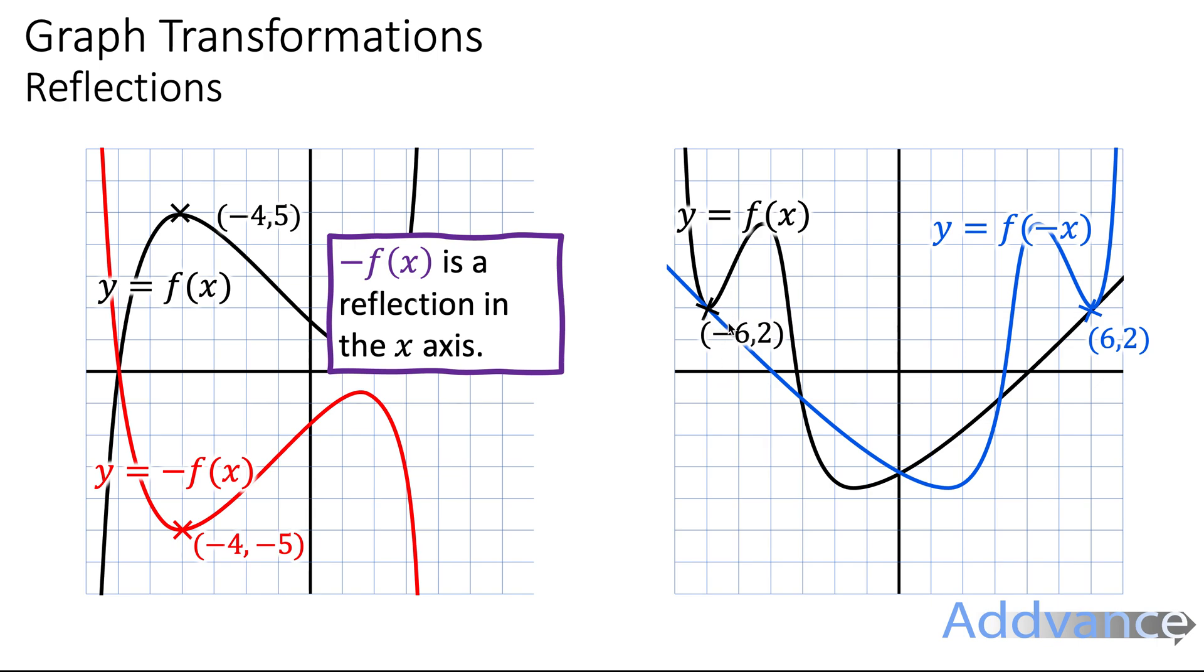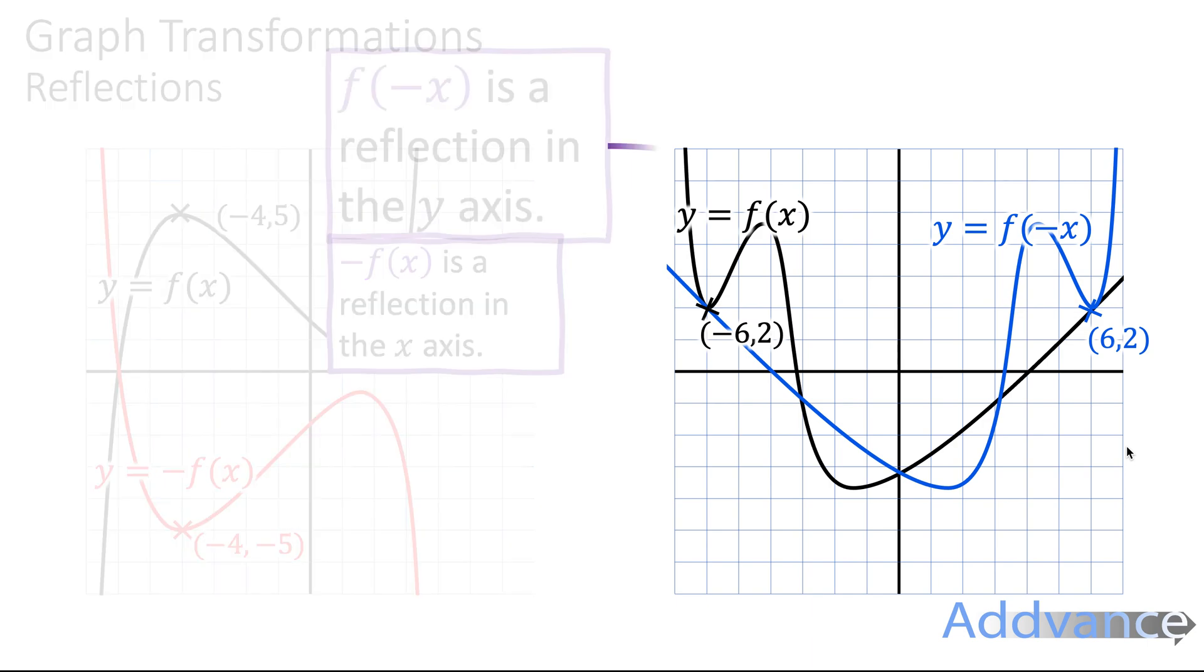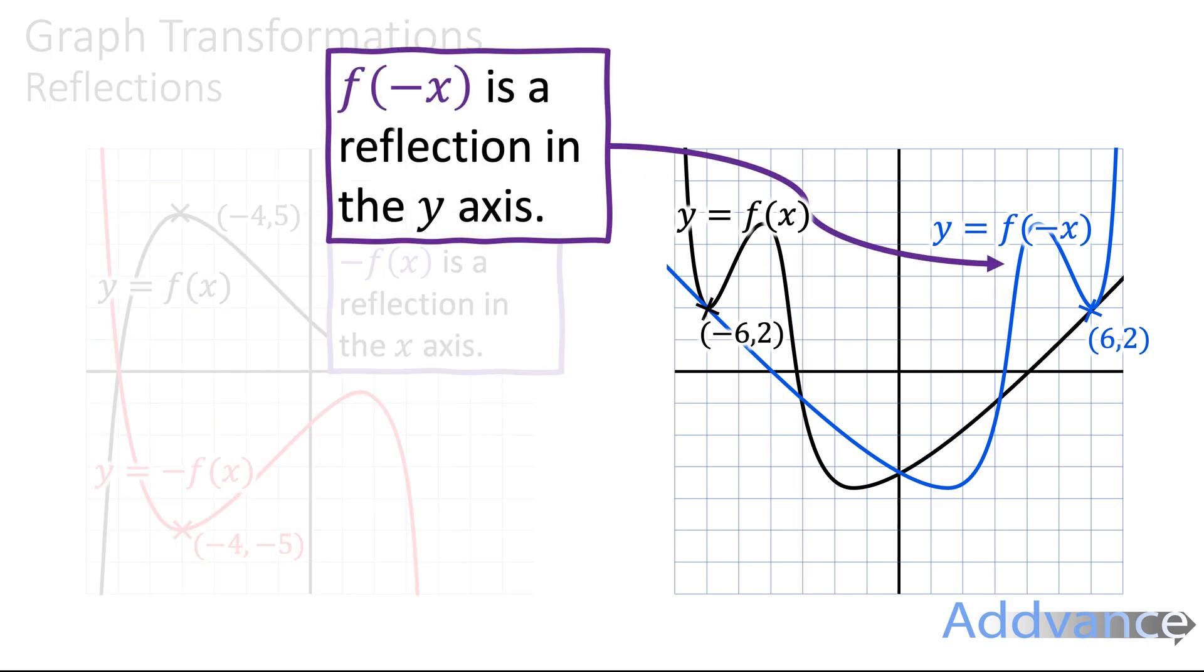Here, the x coordinate has gone from minus six to plus six, the x coordinate has swap sign. So f of minus x is a reflection in the y axis. And the x coordinate swap sign, if it was negative, it becomes positive. If it was positive, it becomes negative.